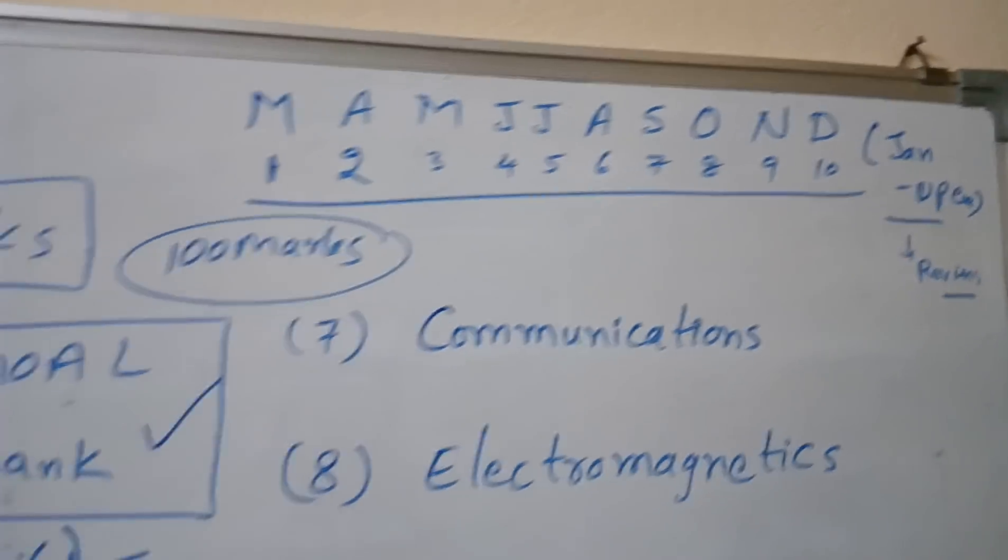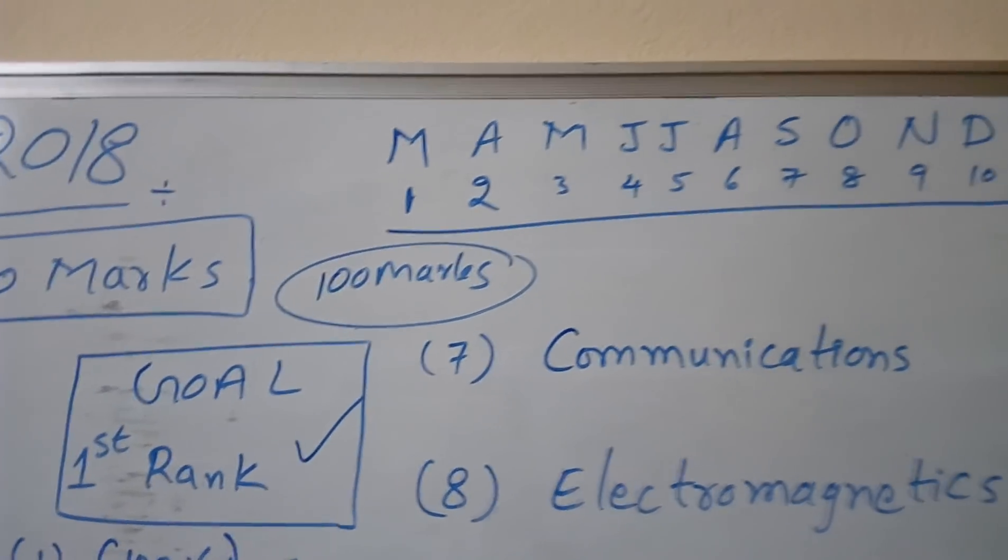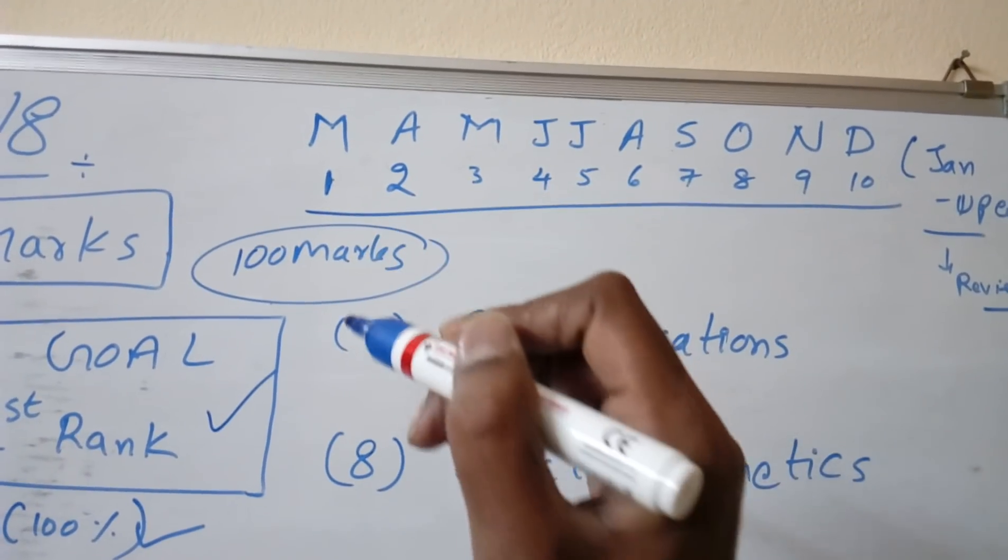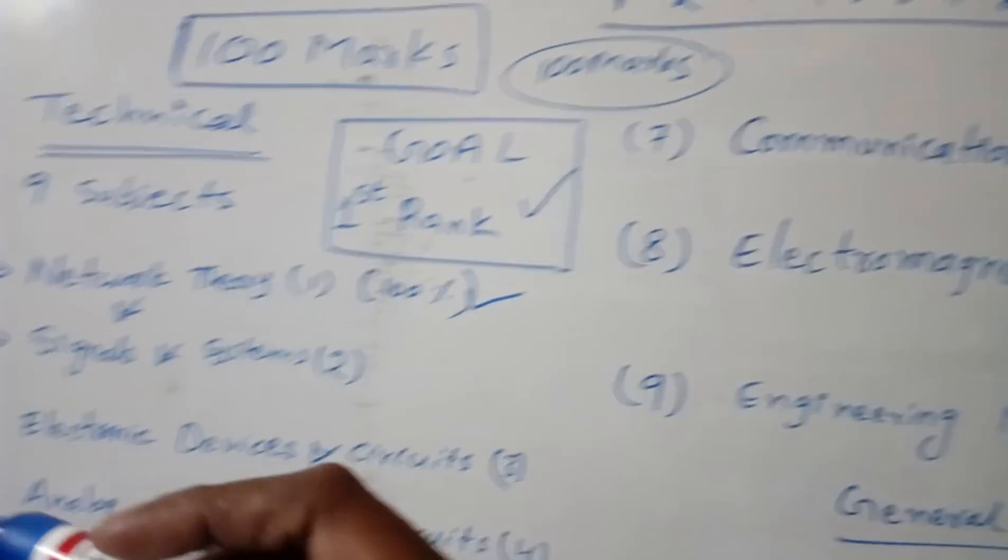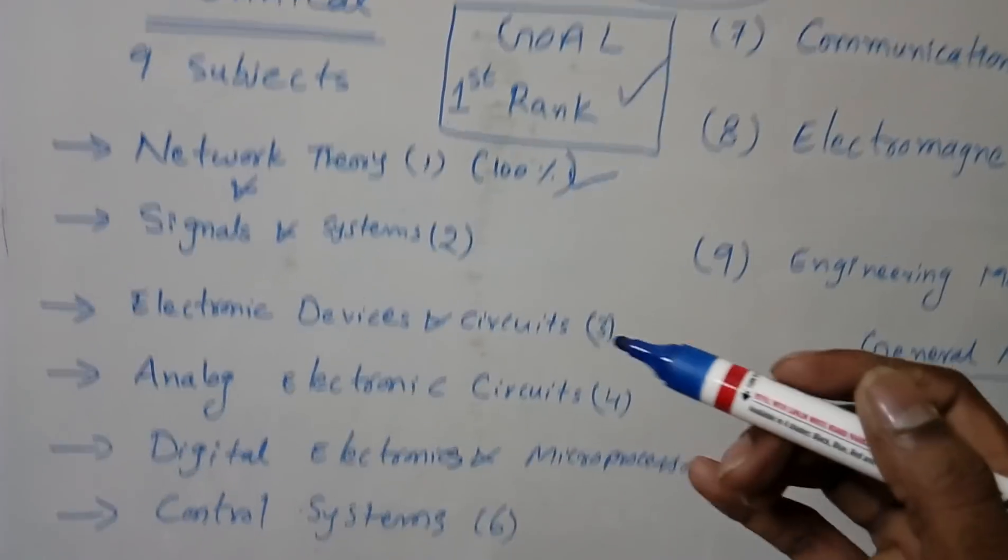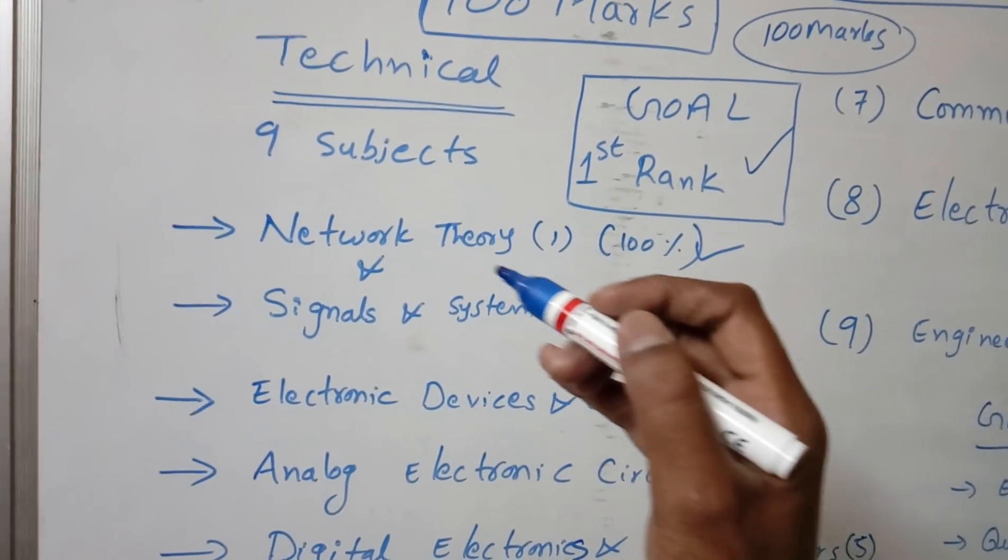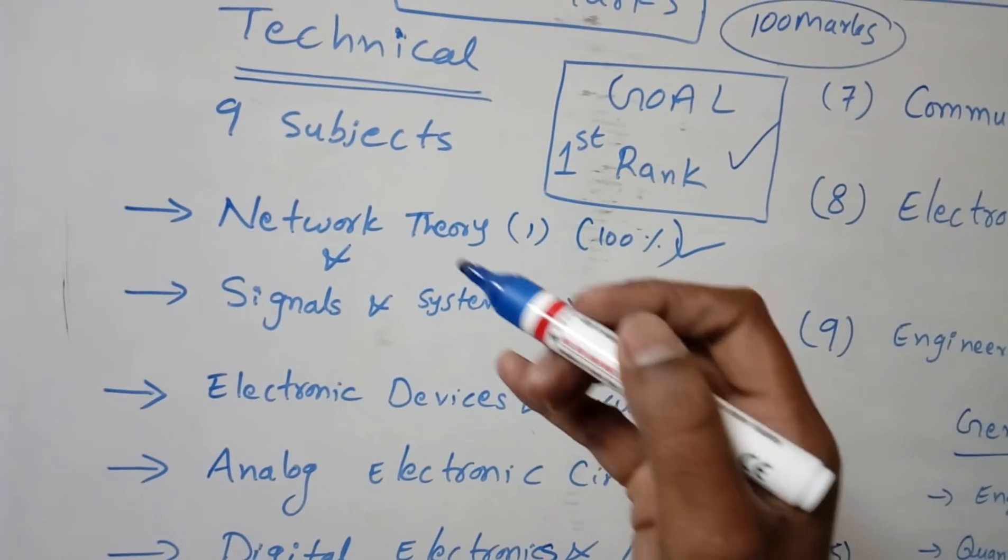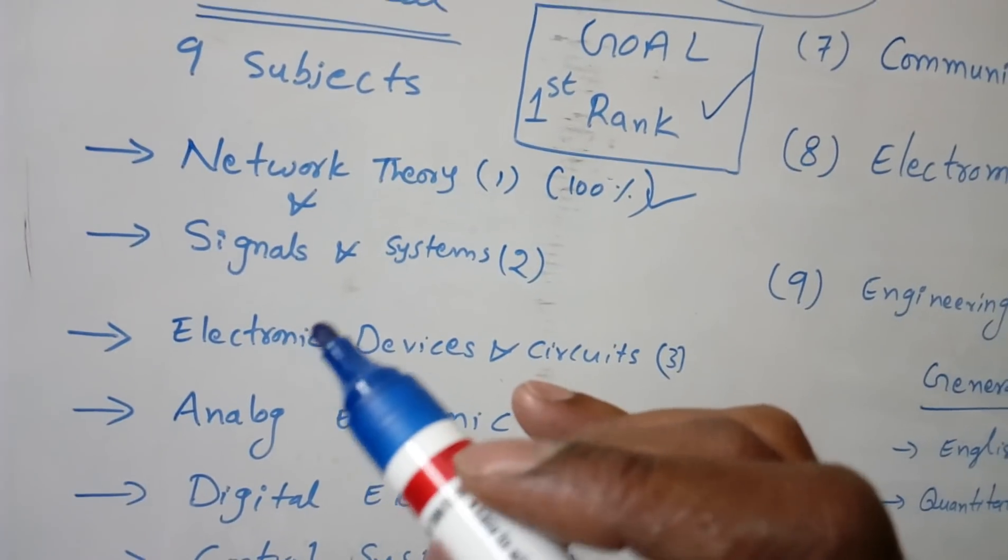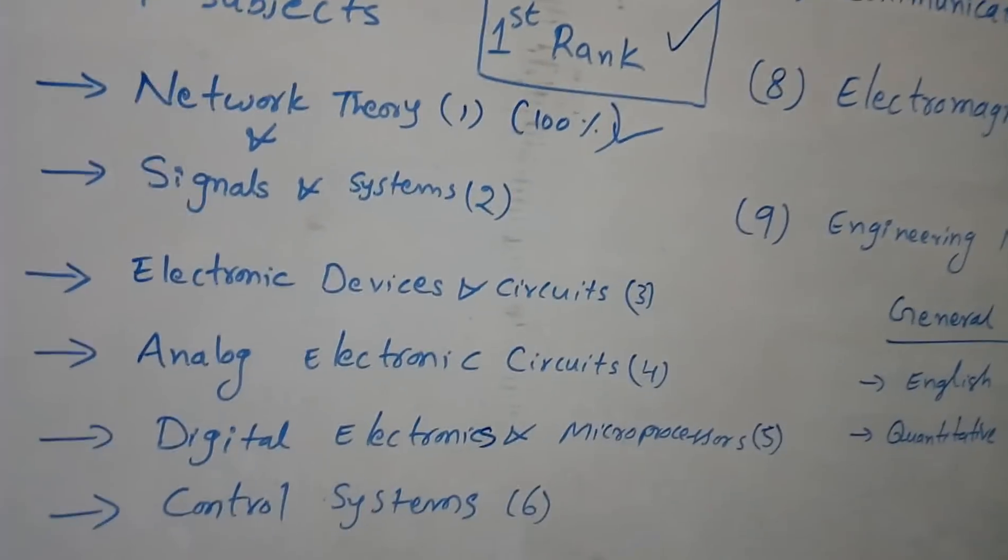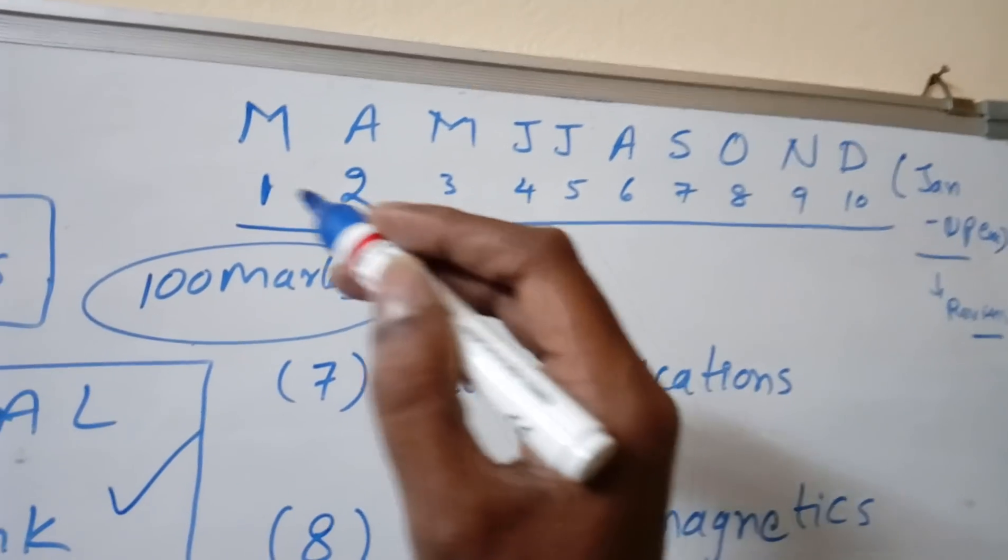We will train you in each subject. For the first month, what subject should we take that will be helpful for all subjects? You cannot start directly with Electronic Devices or Electromagnetics. The first subjects we need to teach are Network Theory and Signals and Systems, then you will get confidence for the remaining subjects.